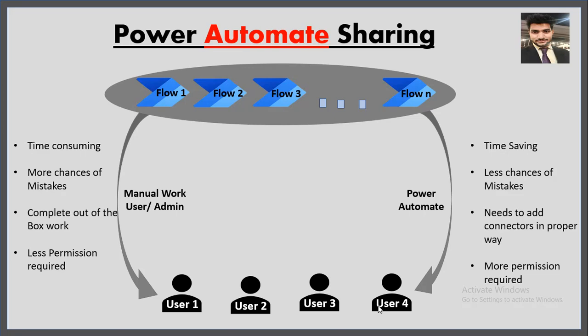The second point is more chances of mistakes. If the user is sharing flows manually, there is a chance of making mistakes. But in the case of Power Automate, if you have created your flow correctly, there will be less chances of mistakes.